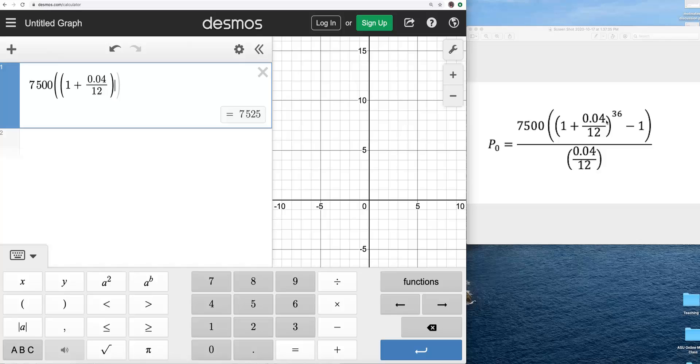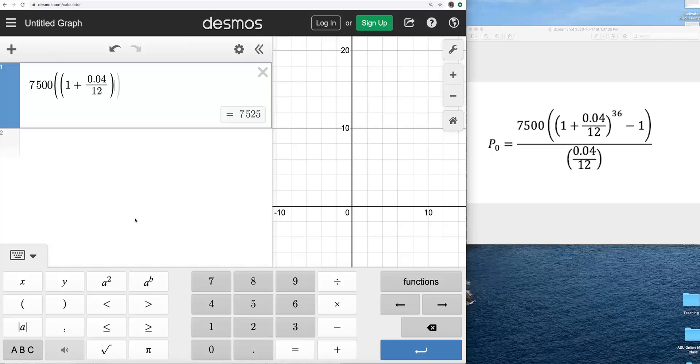And now, I notice I need an exponent. I need to write 36 up there. So, I'm going to use this key here, A to the B, and I'm going to click that key, and Desmos automatically puts our cursor up into the exponential position. I can also use Shift-6 on the computer keyboard, the caret symbol, and that does the same thing.